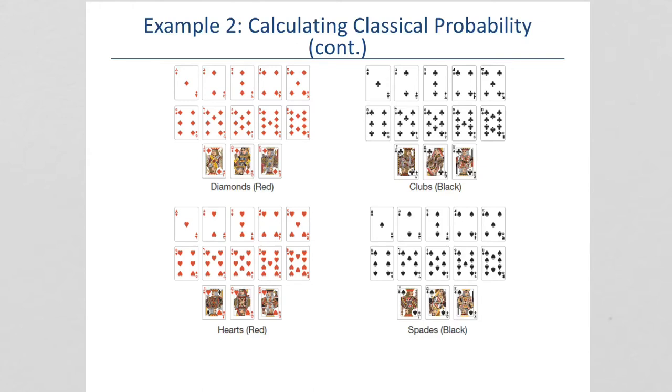There's 13 in each suit. So, 13 diamonds, 13 clubs, 13 hearts, 13 spades. And, they start with an A. And, then 2, 3, 4, 5, 6, 7, 8, 9, and 10. And, then we have Jack, Queen, and King.